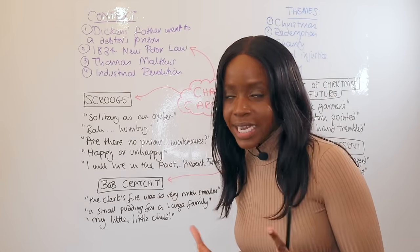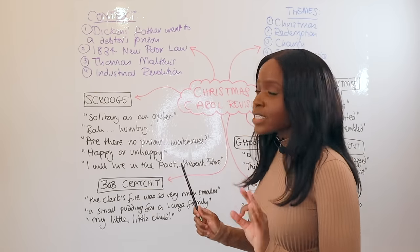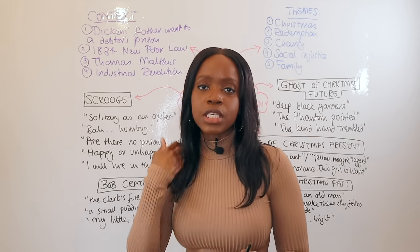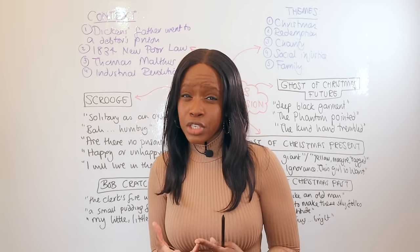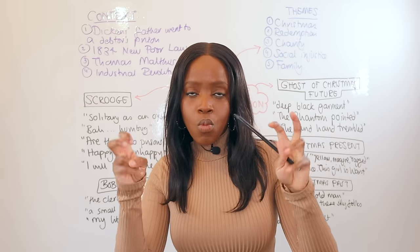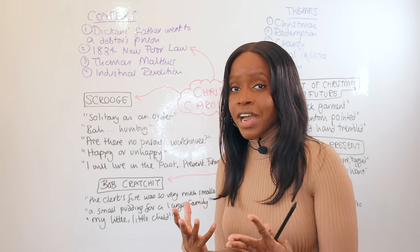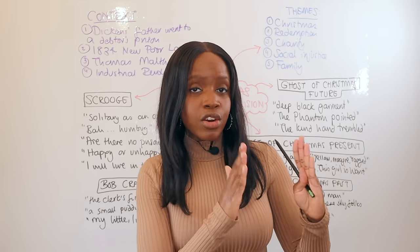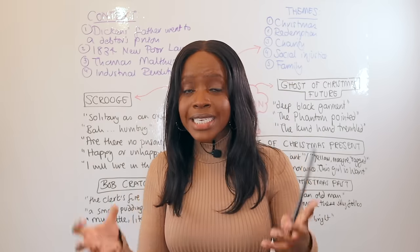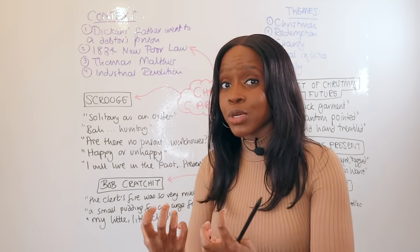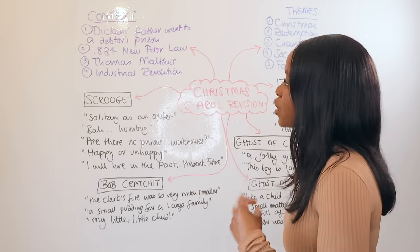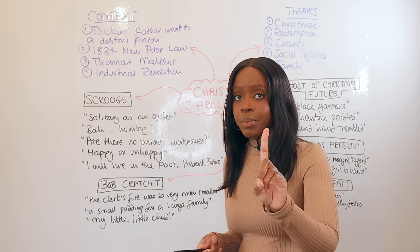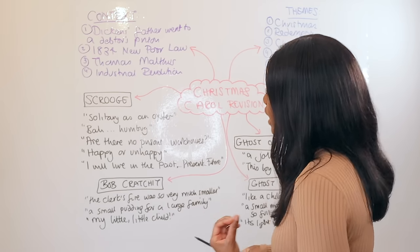The first of four key context points: Dickens' own father went to a debtor's prison when Dickens was just 12 years old. As a result, Dickens had to be put to work at age 12 to help provide for the family. This means that when Dickens wrote about characters like Ignorance and Want, he was writing from personal experience — he directly knew what it was like to work at a young age. Hence, Dickens genuinely empathized with the poor.